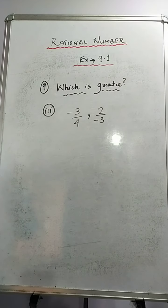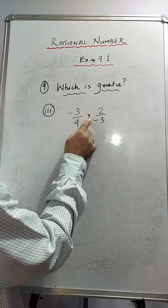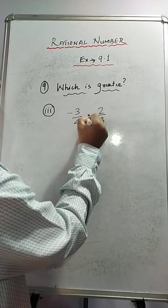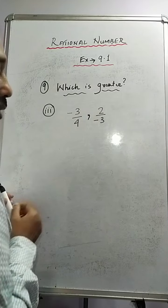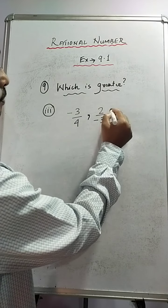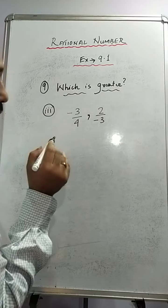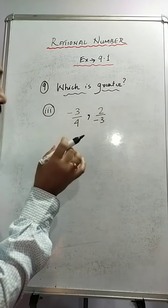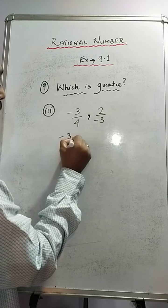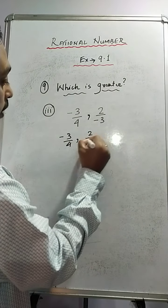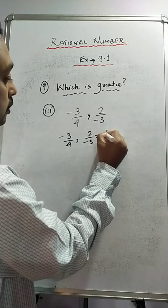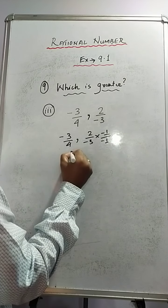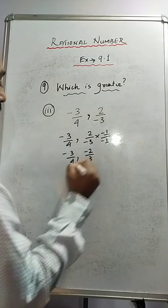In sum number 3 we have minus 3 by 4 and 2 by minus 3. We will change 2 by minus 3 into the form minus 2 by 3. For that, multiply both numerator and denominator by minus 1. So both rational numbers now have the minus sign on the numerator: minus 3 by 4 and minus 2 by 3.